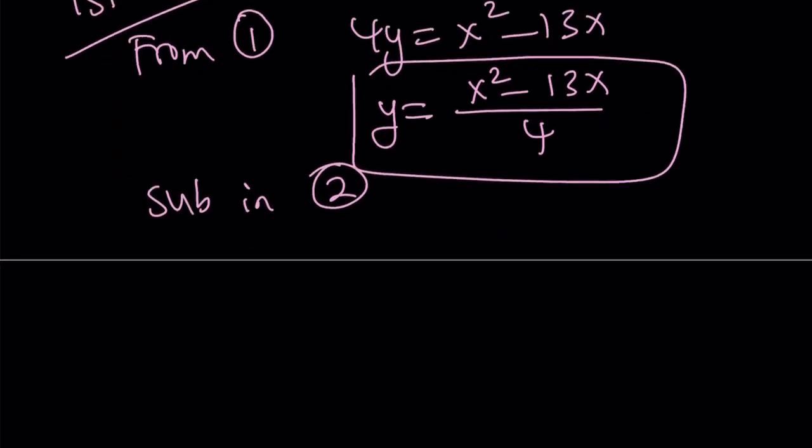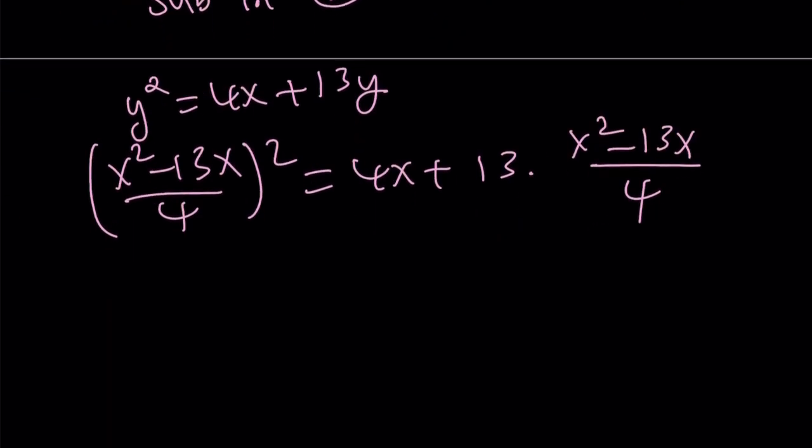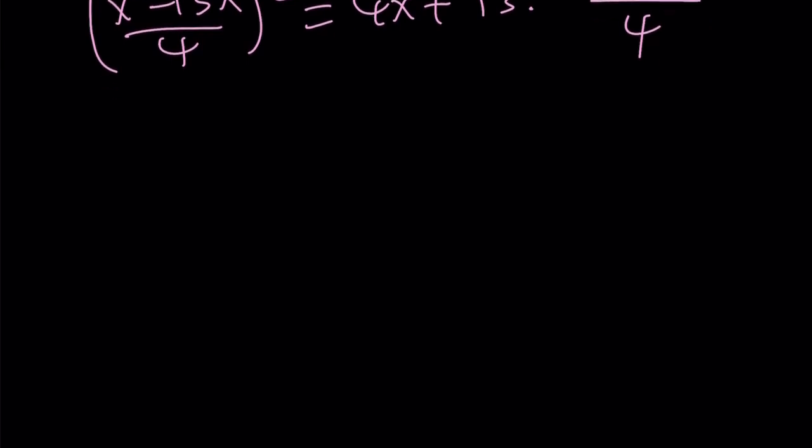What's the second equation? y squared equals 4x plus 13y. Replace y with x squared minus 13x over 4 here and here. So I do get a quartic equation, apologies, from here.